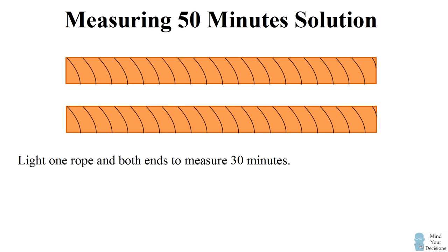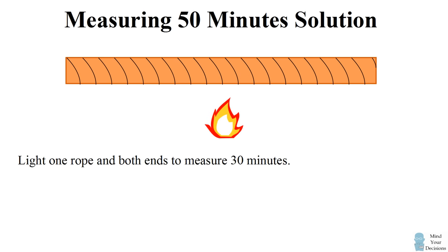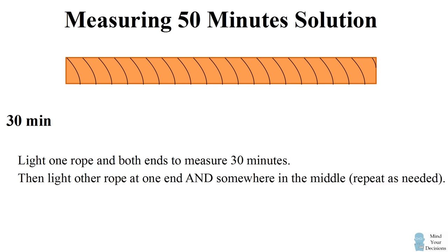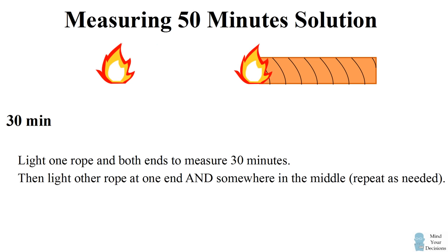So we start by lighting one rope at both of its ends. We already know how to do this. This is going to measure 30 minutes. Exactly when this rope burns out, you want to light the other rope in two different places. You light it at one end, and then you light it somewhere in the middle. So three flames are going to come from that.